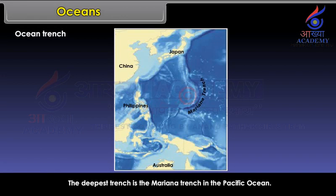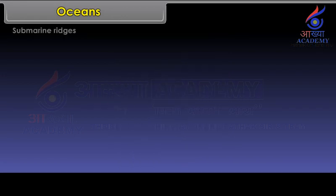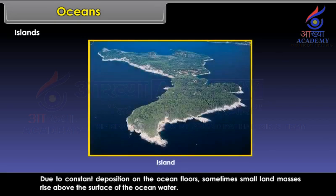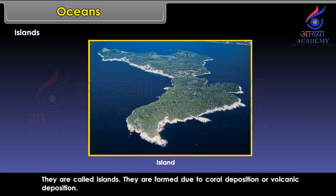Submarine Ridges are like mountain ranges rising above the ocean floors. They are long and narrow and generally remain submerged under the sea water. Islands are small land masses that rise above the surface of the ocean water due to constant deposition on the ocean floors. They are formed due to coral deposition or volcanic deposition.